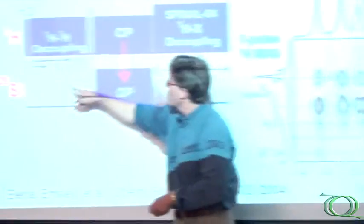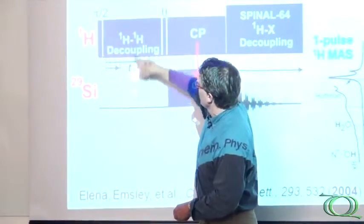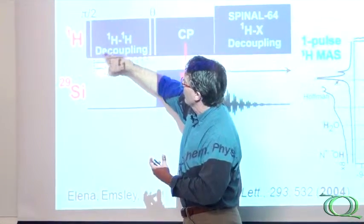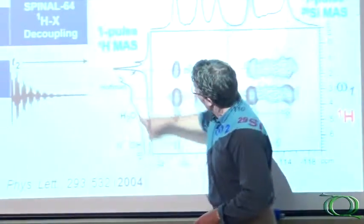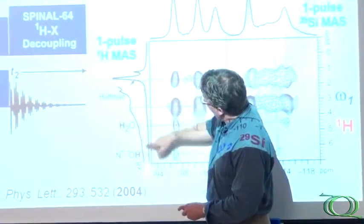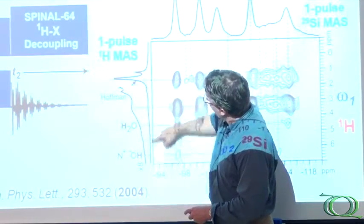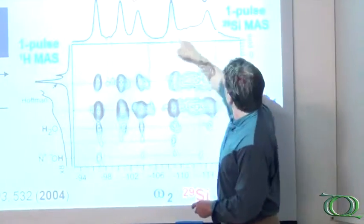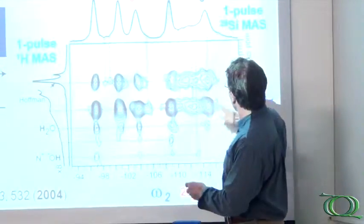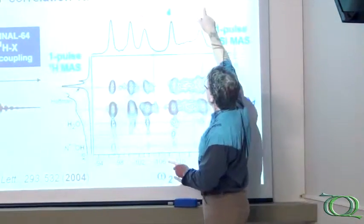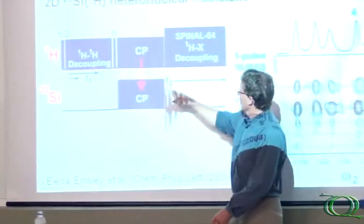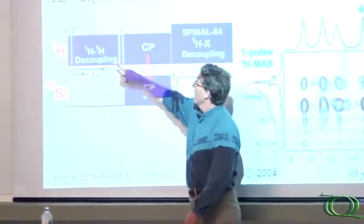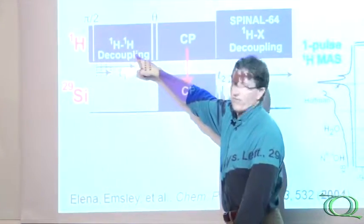And then we detect the silicon under proton decoupling. We do this in a series of incremented evolution times so that we discretely acquire and indirectly the proton signals so that we can establish what the proton signals here are. We can obtain a magic angle spinning experiment in a proton dimension which corresponds to the proton signals from our surfactant. In that we detect the silicon. So what you get then is a two-dimensional frequency map which in a two-dimensional spectrum allows you to correlate the silicon-29 signals with the specific hydrogen moieties from which they receive their magnetization.